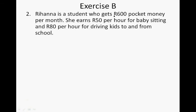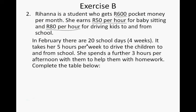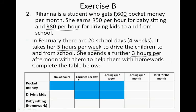Rihanna is a student who gets R600 pocket money per month. She earns R50 per hour for babysitting and R80 per hour for driving kids to and from school. In February there are 20 school days — four weeks. It takes her five hours per week to drive the kids, and she spends three hours per afternoon helping them with homework. Driving: 5 hours/week × 4 weeks = 20 hours for the month. Babysitting: 3 hours/day × 5 days × 4 weeks = 60 hours for the month.